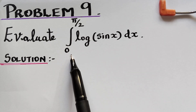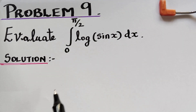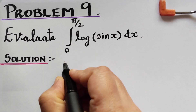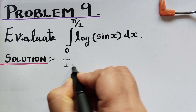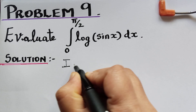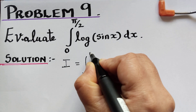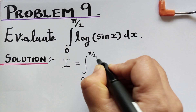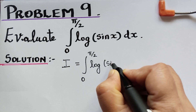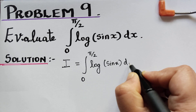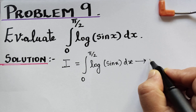As the first step, we have to consider the given integral as capital I. So this integral can be rewritten as I = ∫₀^(π/2) log(sin x) dx, and let us mark this as equation 1.